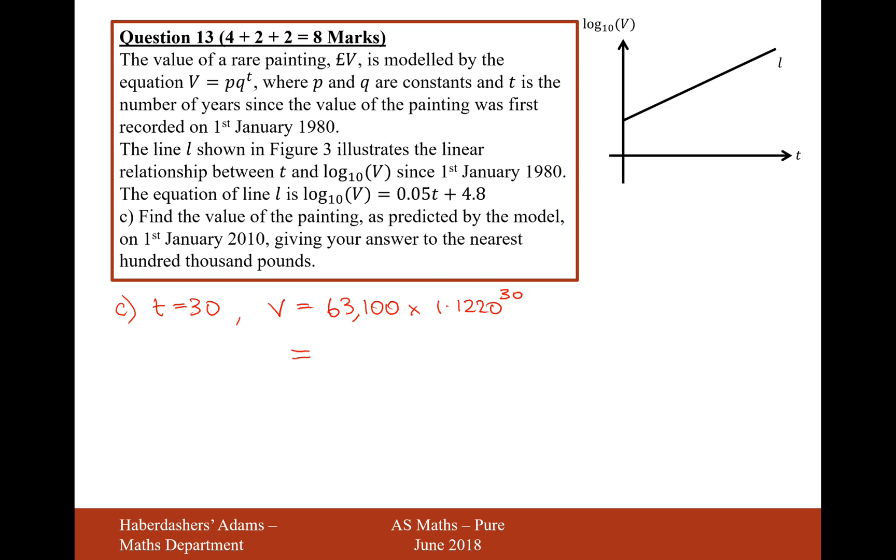63,100 times 1.1220 to the power of 30, and that is nearly 2 million pounds. It gives you the nearest 100,000, so that's going to be 1,994,000. Giving us to the nearest 100,000, that's going to be 2 million. If we round properly there. That's the value of the painting on the 1st of Jan 2010.